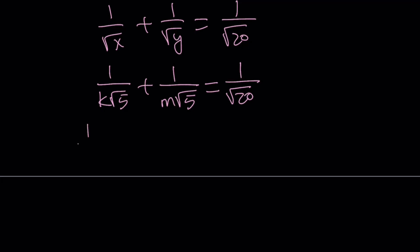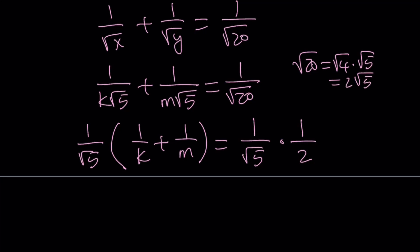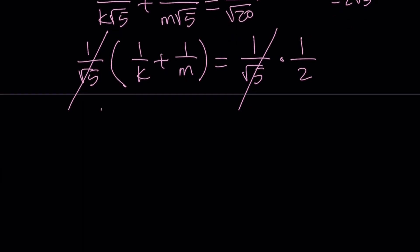Let's go ahead and do this. We can take out 1 over square root of 5. That's going to give me 1 over k plus 1 over m. And here I can write this as 1 over square root of 5 times 1 over 2, because square root of 20 can be written as square root of 4 times square root of 5, and that is 2 times the square root of 5. Now we can cancel these out, and we end up with a very simple, very nice equation: 1 over k plus 1 over m equals 1 half.